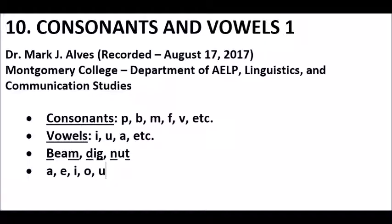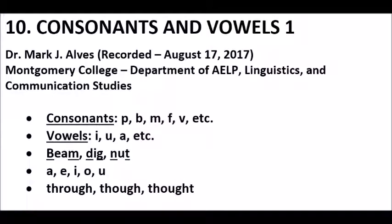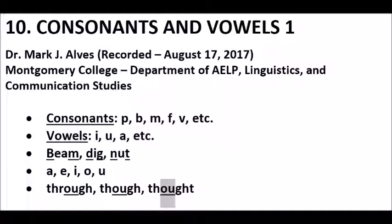The spellings of English vowels are very inconsistent, and the same letters or combinations of letters often have different sounds in different words. Notice this in these three words: through, though, and thought. These all have o-u-g-h, but each has a different vowel sound. This is a good example of separating English spelling from actual speech sounds.